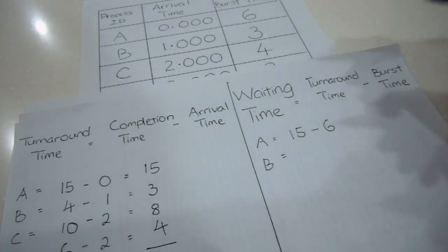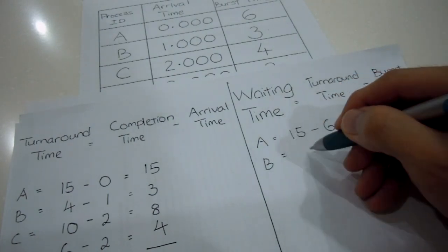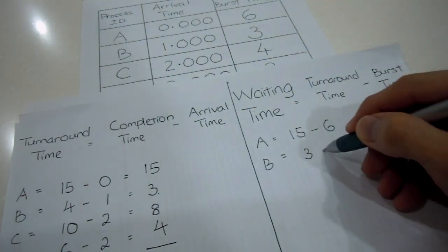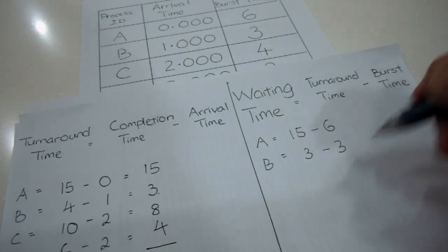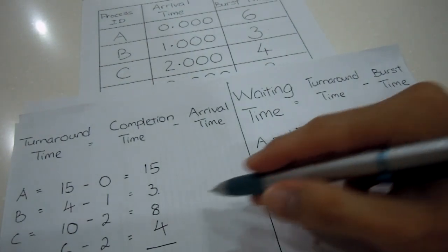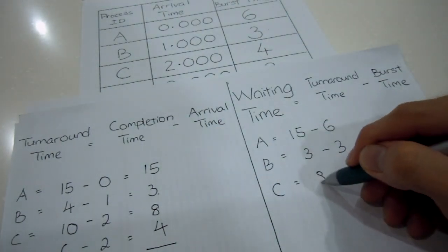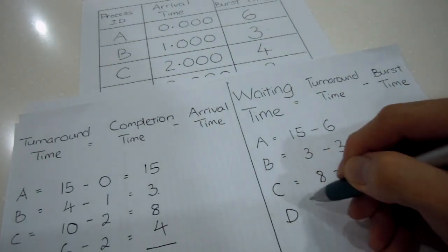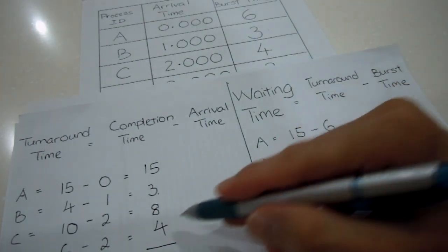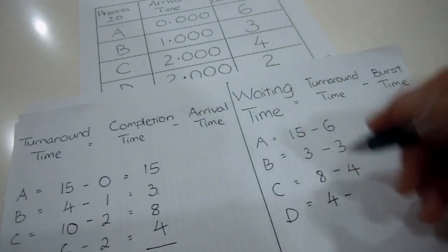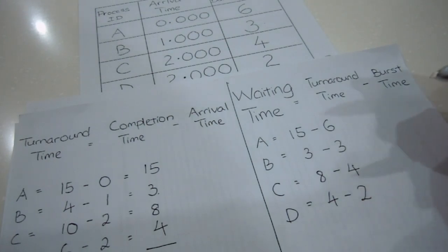For waiting time for B, the turnaround time is 3 minus my burst time of 3. For C, I have 8 minus the burst time of 4. And for D, I have 4 minus the burst time of 2 milliseconds.